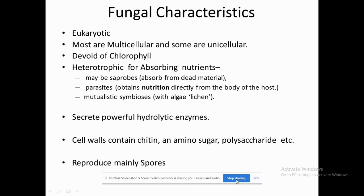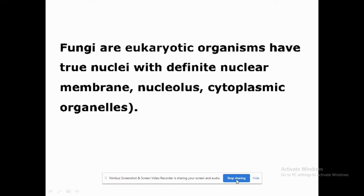Fungi mostly reproduce by the formation of spores. There are various modes of reproduction — vegetative, sexual, and asexual — but in all modes spores are formed. To summarize: fungi are eukaryotic organisms with true nuclei, a definite nuclear membrane, nucleolus, and cytoplasmic organelles.